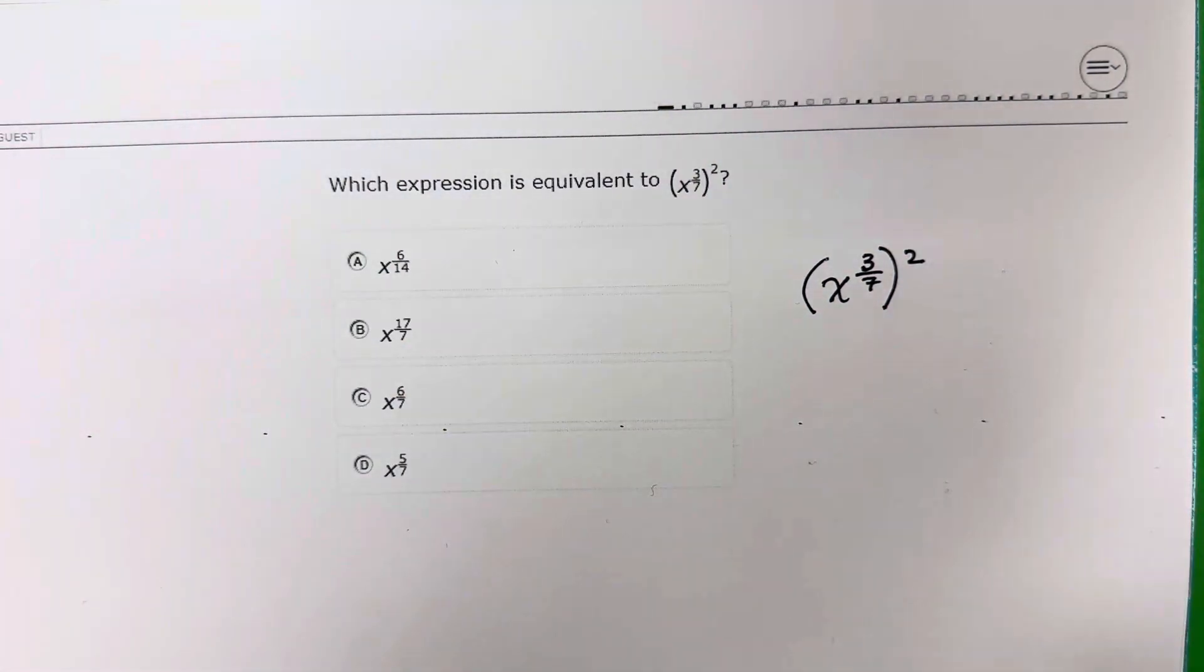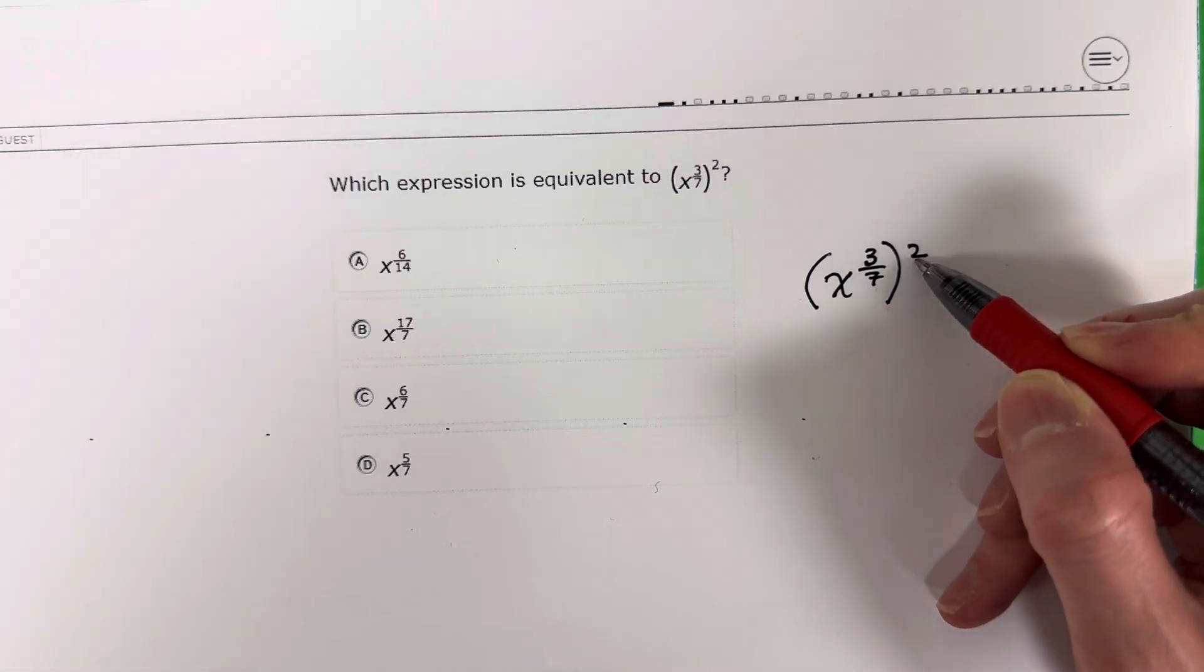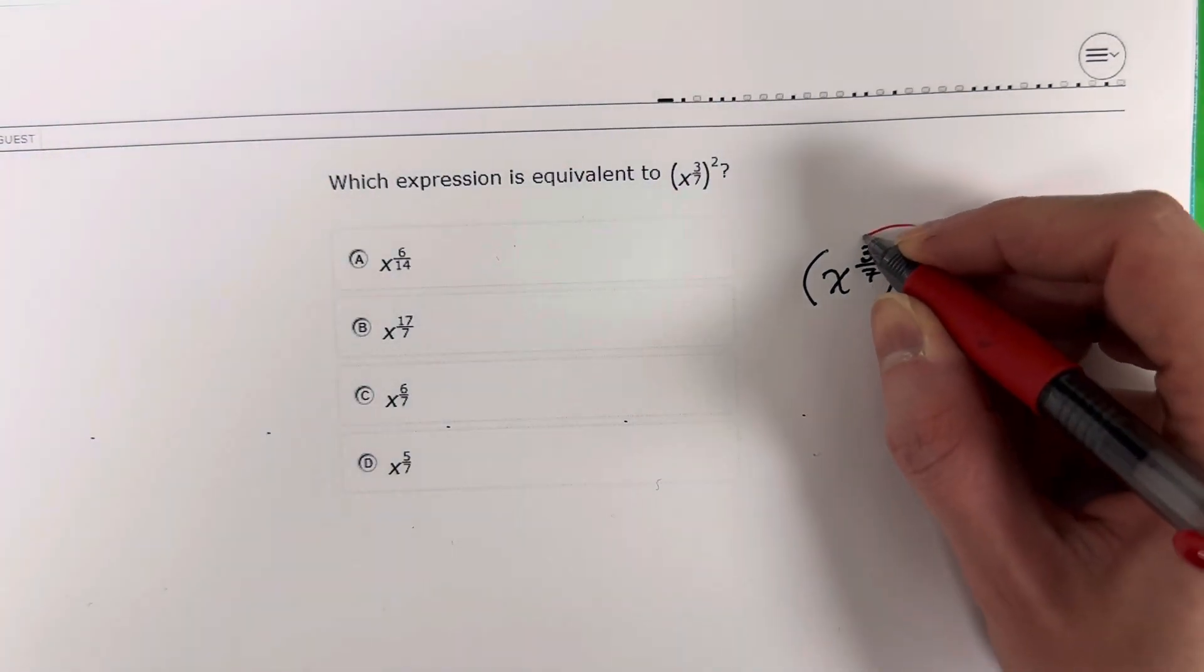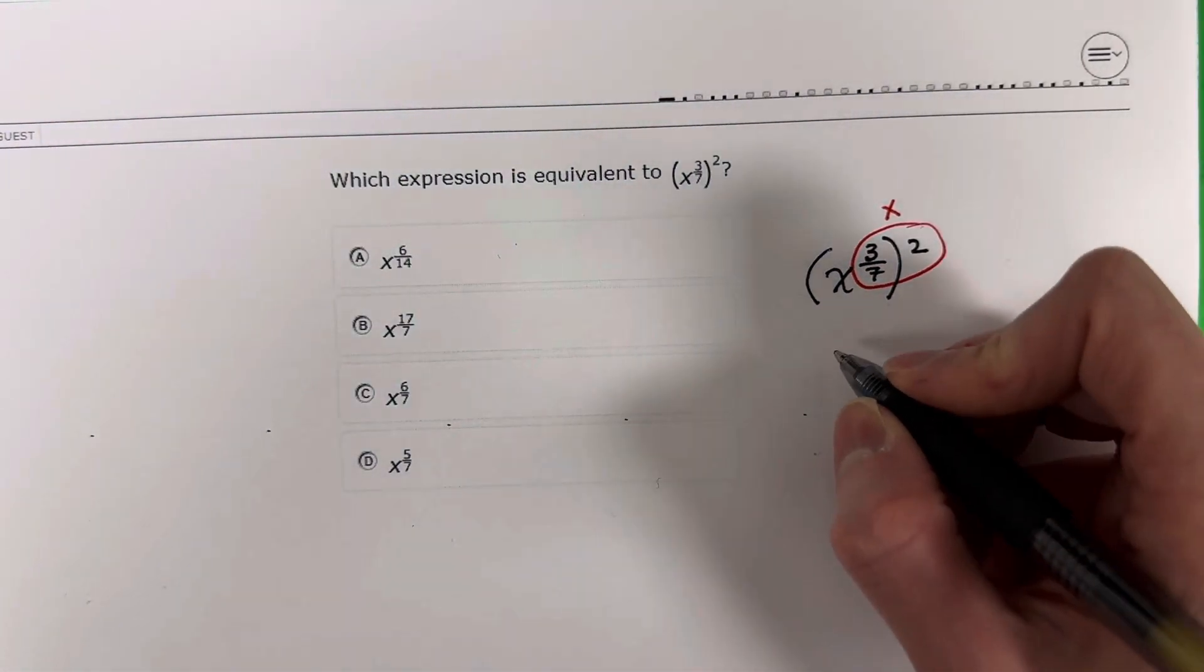Okay, so the rule for this is if you have an exponent in parentheses raised to another exponent, you multiply them. Alright, so you're going to copy the base.